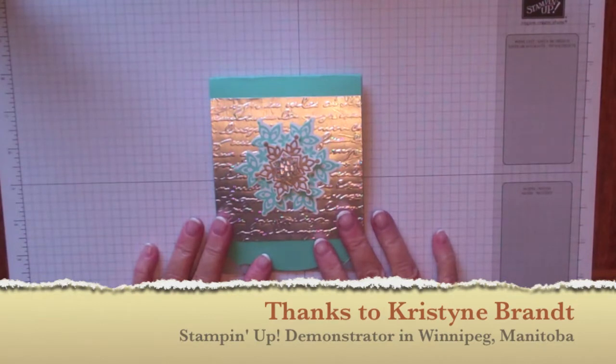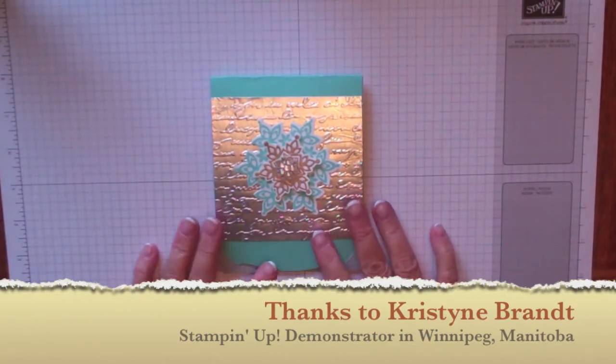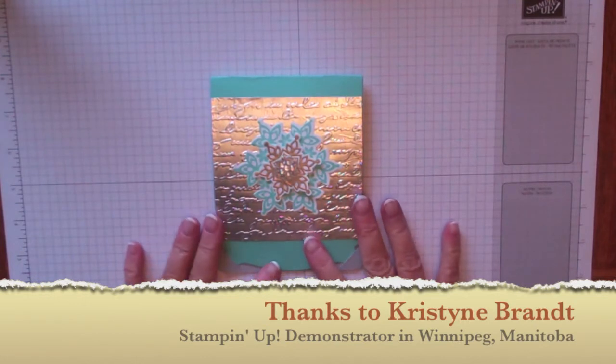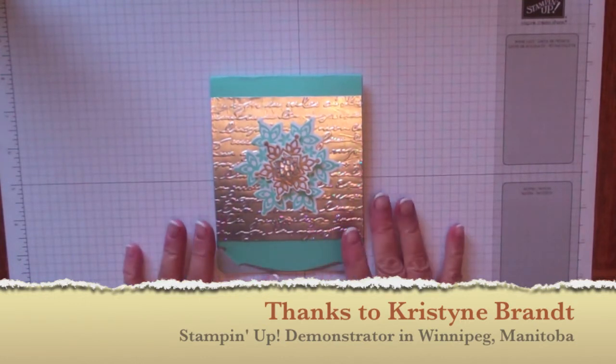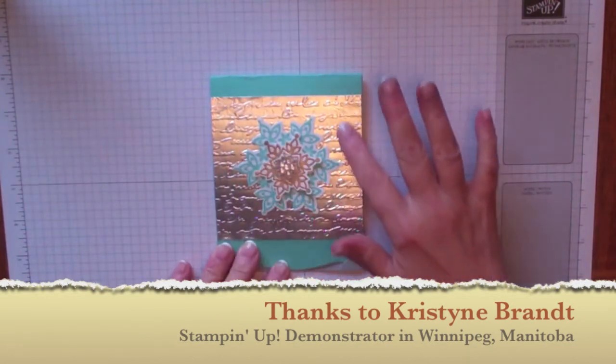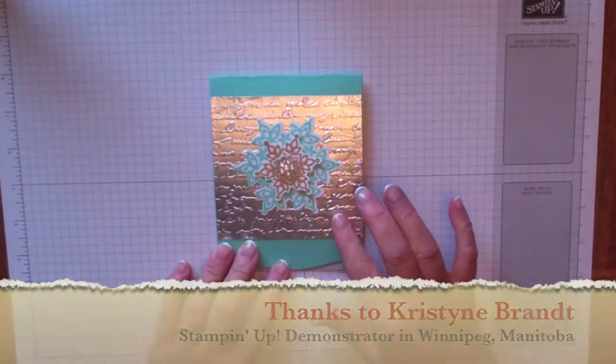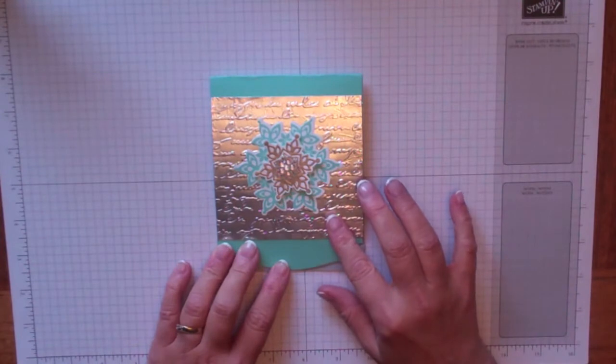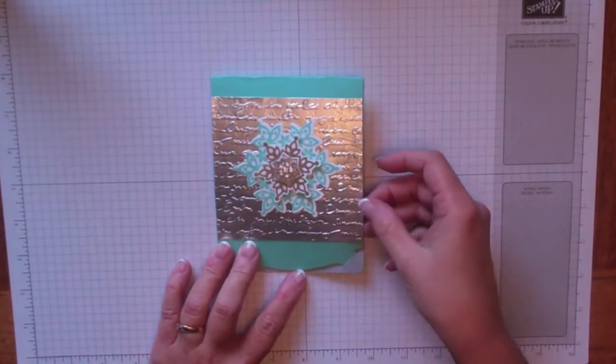This was a card that I received from my friend Christine Brandt from Winnipeg. When I opened it, I couldn't believe how beautiful it was. It's even more beautiful in person. What struck me was this way that Christine had embossed just regular aluminum foil to create this really cool look on the front of the card.